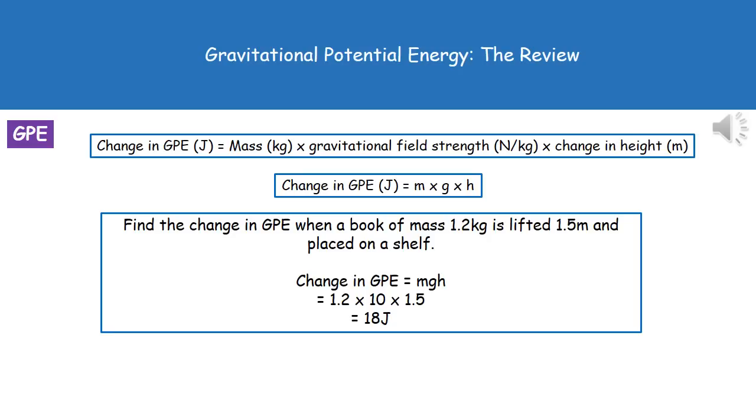In our question, we've got mass 1.2 kilograms, height 1.5 meters, and because we're on Earth, the gravitational field strength is 10. All we need to do is plug those numbers into our formula from page two: 1.2 times 10 times 1.5 gives us 18 joules.